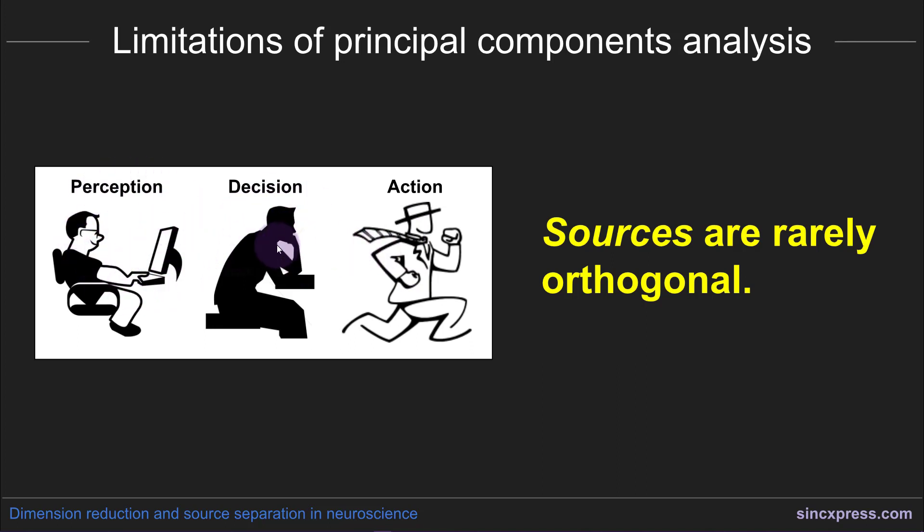But obviously these are all highly related. You use sensory information to make decisions, and your decisions guide your actions. So these are separate cognitive processes that can be studied independently of each other, but it's crazy to think that these are orthogonal processes. Something like PCA is not going to be able to separate these kinds of cognitive processes or their neural representations.